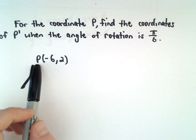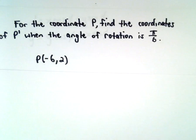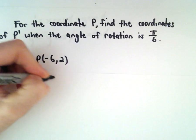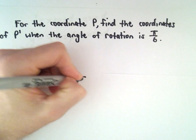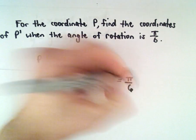Here we have the point P with coordinates: the x value is -6, the y value is 2, and the angle φ is π/6.